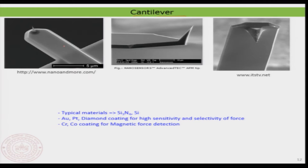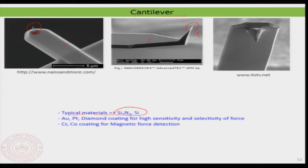This is the cantilever part and this is the tip. You can get different types of cantilever and tip, looking slightly different depending on the application. The material most commonly used for making the tip is silicon nitride or silicon — they are easily millable and have good hardness, making them a preferred material.